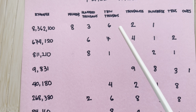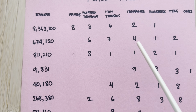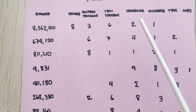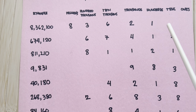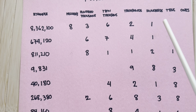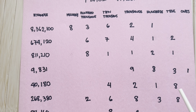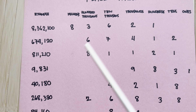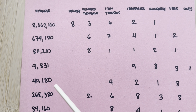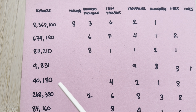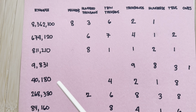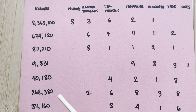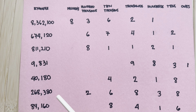Four ten-thousands plus two thousands plus one hundred plus eight tens is equal to forty thousand one hundred and eighty. Let's try the other example.